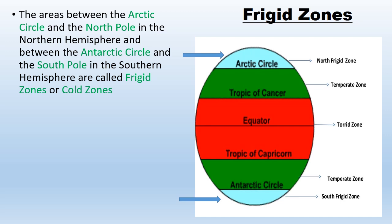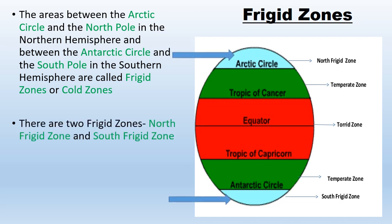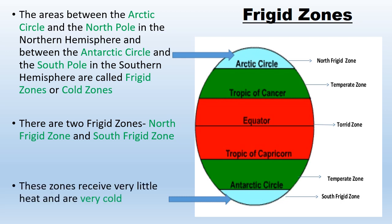The areas between the Arctic Circle and the North Pole in the Northern Hemisphere, and between the Antarctic Circle and the South Pole in the Southern Hemisphere, are called Frigid Zones or Cold Zones. There are two Frigid Zones: the North Frigid Zone and the South Frigid Zone. These zones receive very little heat and are very cold.